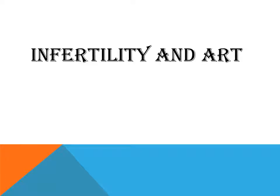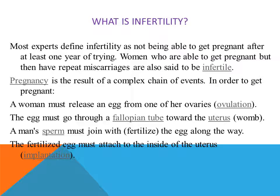Greetings Grade 12. We will be continuing the chapter on Reproductive Health. We are at the fourth session: Infertility and ART. We talked about different contraception methods and sexually transmitted diseases. Now we are going to see what infertility is and what are the various methods by which it can be rectified.